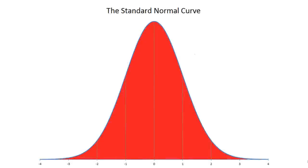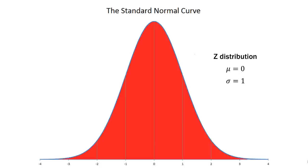A few reminder slides before we get into the questions. This is the standard normal curve — I went ahead and shaded the area underneath it in red because that's what we're interested in. The standard normal curve has a mean of zero and a standard deviation of one. It's helpful when comparing data in different units. In theory, this distribution goes from negative infinity to positive infinity, but for practical purposes we almost always work within three or four standard deviations from the mean.